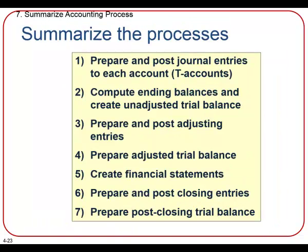Let's summarize everything we've done so far. We prepare and post journal entries and post those individual entries to the T-accounts or the ledgers for each account. Then we compute the ending balances for each account — say cash. We know the ending balance of cash because we posted the transactions. Then we can create an unadjusted trial balance with all the balances for each account. We'll prepare and post adjusting entries, then prepare the adjusted trial balance to make sure we're still in balance with our debits and credits. Then we'll create the financial statements from the amounts listed on the adjusted trial balance. The last thing we'll do is prepare and post the closing entries so we start over with a zero balance for the next year. Then we'll do a post-closing trial balance to make sure all debits and credits are equal and we have a zero balance for our expenses and revenues.